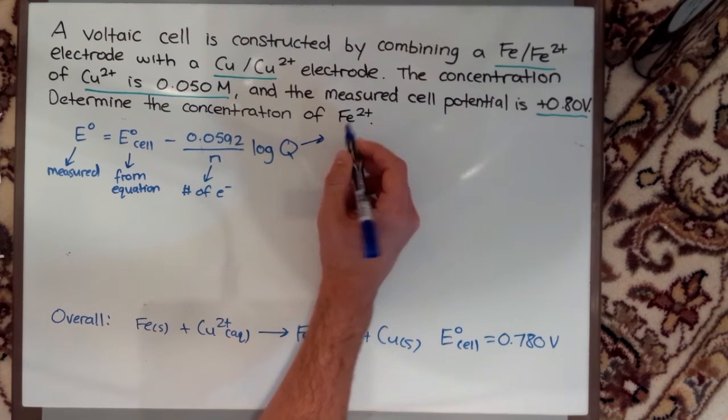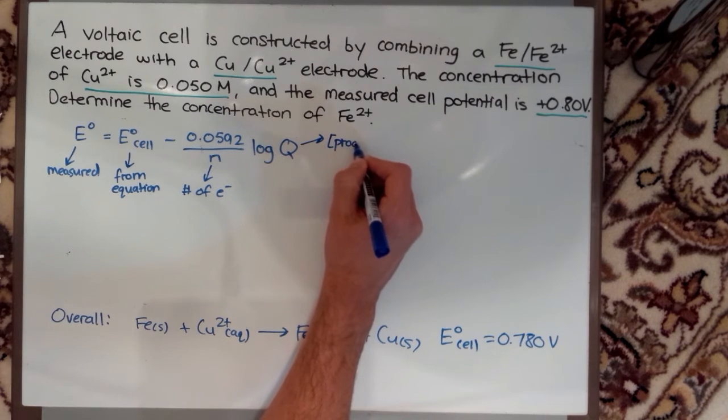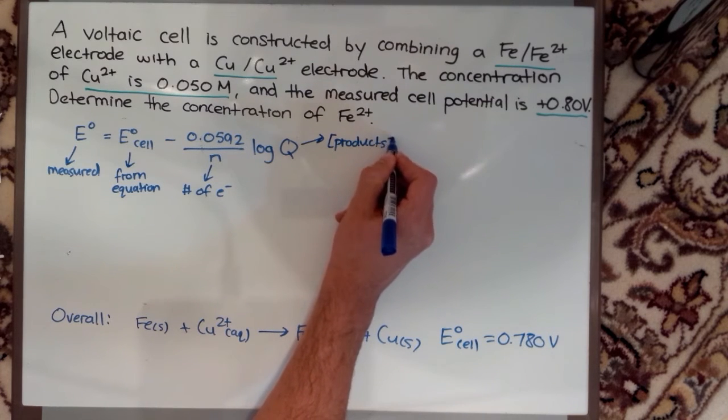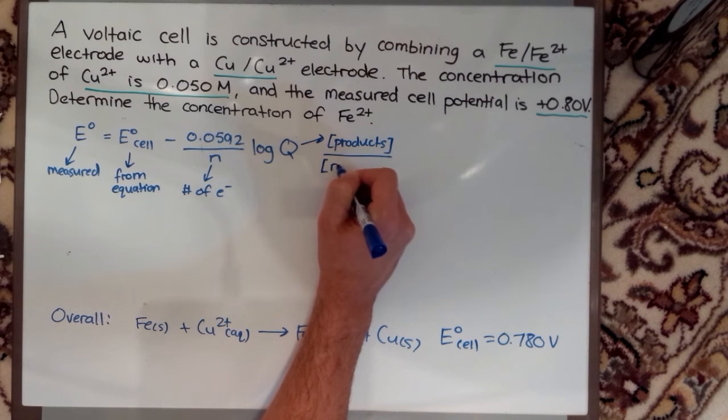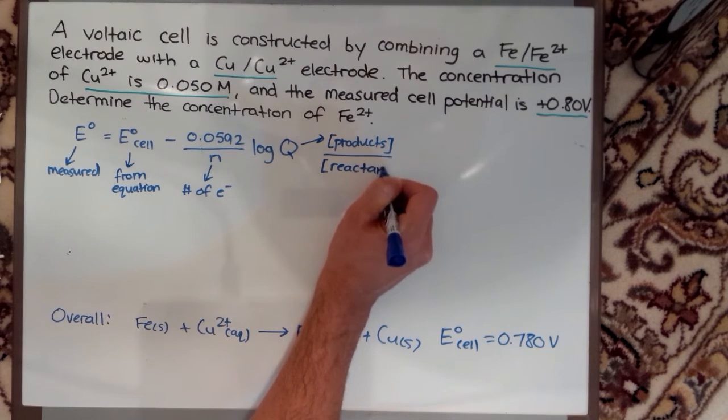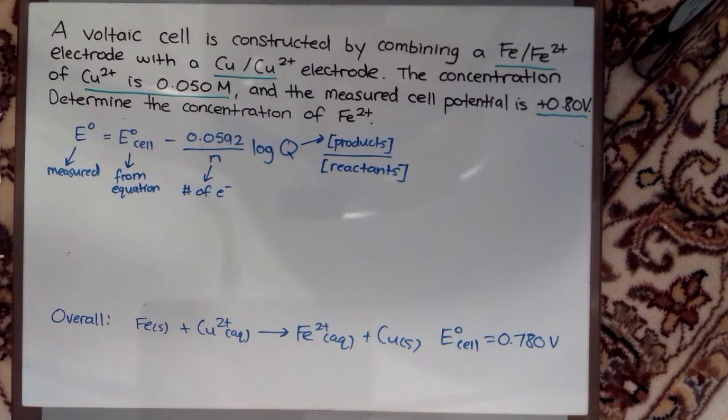Q is just my concentration of products over my concentration of reactants. Keep in mind that in my equation I have solid iron as one of my reactants and solid copper as one of my products. Anytime you see solids in these reactions you don't need to consider them, just exclude them completely. So let's start filling out our equation.